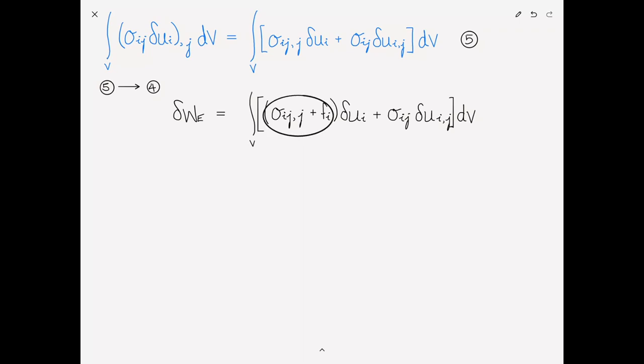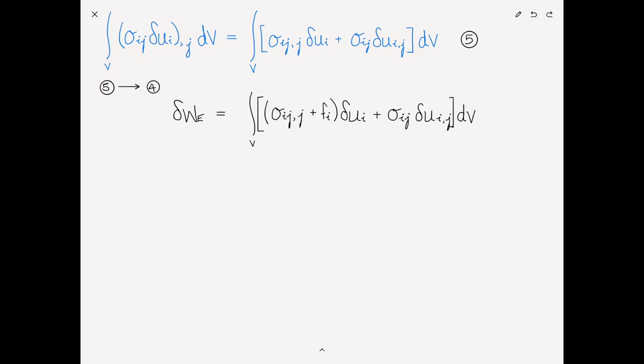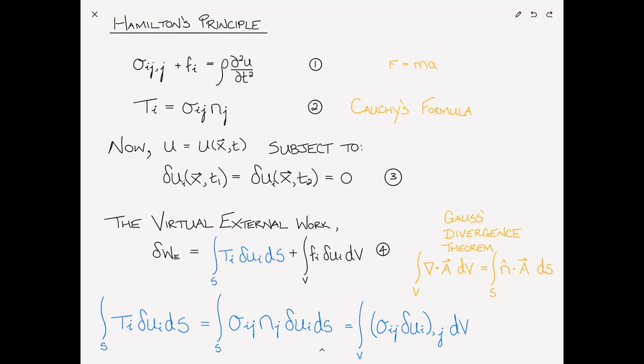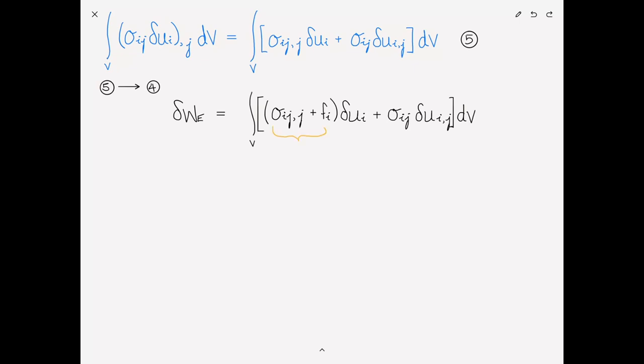Now, this part here, which I've grouped, is simply what I presented at the beginning as F equals ma on a material level. So, sigma ij comma j plus fi is equal to rho d squared U dt squared, or we can write that as rho U double dot. And again, this is from D'Alembert's principle or from Newton's second law. So, making the substitution, this is equal to the integral over the volume of rho Ui double dot, del Ui, plus sigma ij, and then del Ui comma j is just the strain, that's del epsilon ij. So, plus sigma ij del epsilon ij dv.